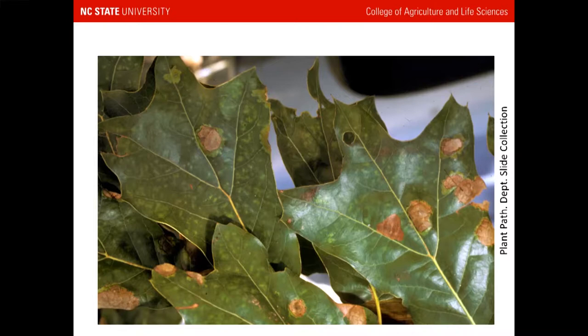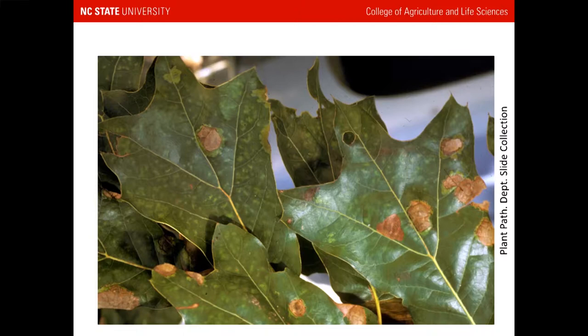Have you seen this? It's called leaf blister — oak leaf blister. It's really a cosmetic disease. The infection occurs in spring, starting as a light green convex spot. Around June that spot dies out, and it appears to be spreading and getting worse, but really the infection occurred earlier and nothing new is happening except the tissue is dying. This is strictly a cosmetic problem. Some years are worse than others, but remember this tree is shedding those leaves at the end of the season, and a deciduous tree can withstand a certain amount of defoliation and still be fine.